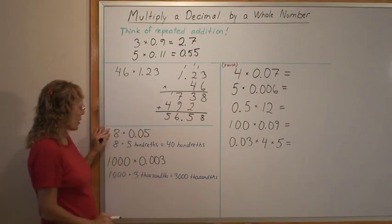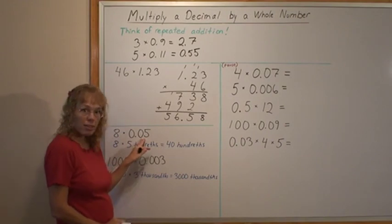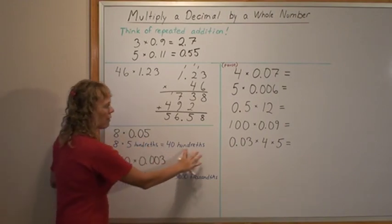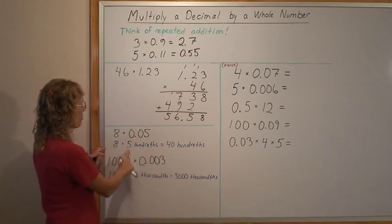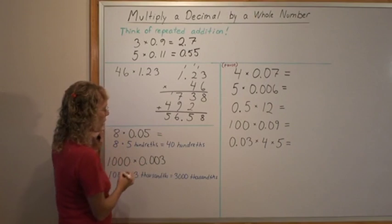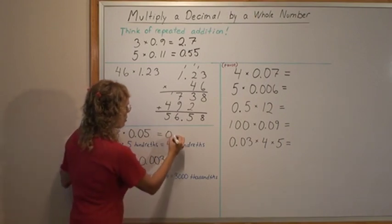Here's another example, 8 times 5 hundredths. And if you think of it is like 8 times 5 apples you'll have apples in the end. 8 times 5 is 40. And then we just write it as a decimal and it is 0.40.